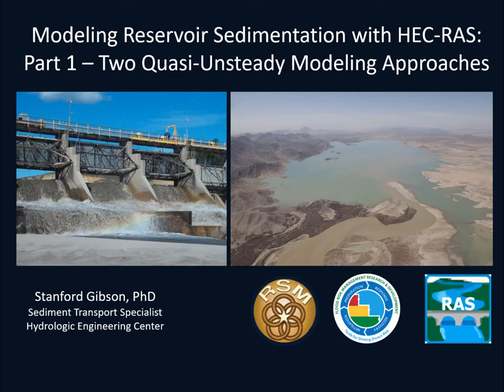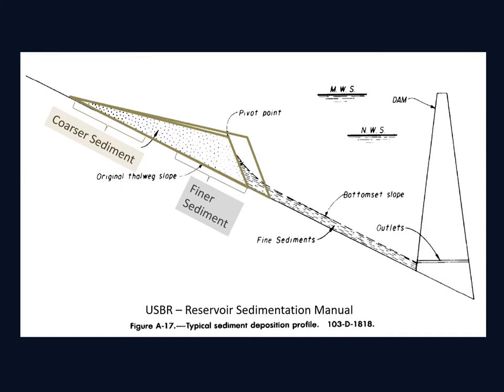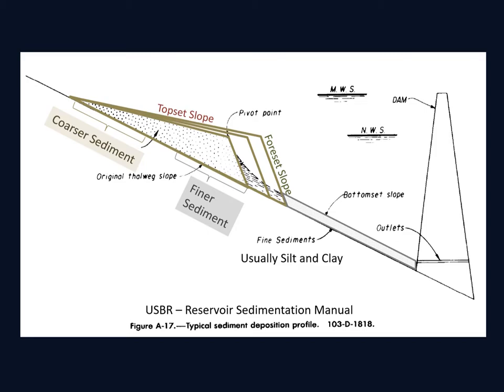Before you model any sediment process, it's really important that you understand how that process works. This video won't go deep into sediment transport processes in reservoirs, but let's cover a couple of basic principles. The first is that most reservoirs form some sort of delta. The coarser sediment deposits upstream, the finer sediment deposits downstream, and you develop a delta almost like a smaller scale version of a river flowing into the ocean. You end up with a prograding wedge where you have a gradual topset slope and then a steeper foreset slope advancing into the pool.